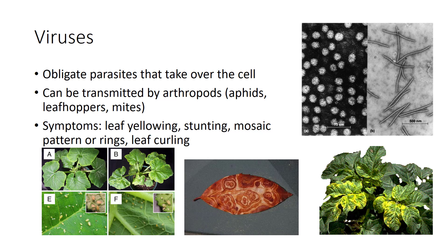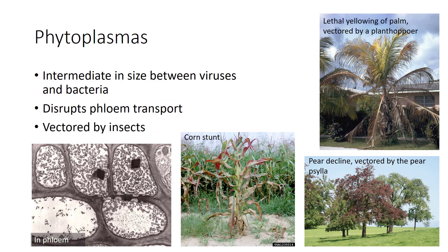Phytoplasmas are small, parasitic organisms lacking constant shape and are intermediate in size between viruses and bacteria. These organisms are found in the phloem and disrupt phloem transport, leading to plant yellowing, wilting, distorted plants, and overall plant stunting. Like many viruses, these are also spread by insects. Common diseases caused by phytoplasmas are aster yellows, lethal yellowing of palms, pear decline, mulberry dwarf disease, and corn stunt. Like viruses, there is no way to stop phytoplasmas; however, they can be controlled using resistant cultivars and effectively controlling insect vectors.